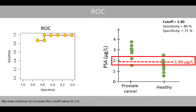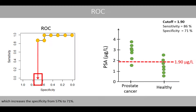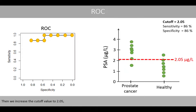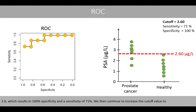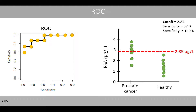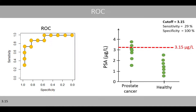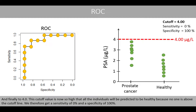Increasing the cutoff to 1.9 raises the specificity from 57% to 71%. Continuing to increase the cutoff to 2.05, 2.25, and 2.6 results in 100% specificity and 71% sensitivity. Increasing further to 2.85, 3.0, 3.15, 3.55, and finally 4.0 results in a cutoff so high that all individuals are predicted to be healthy, giving 0% sensitivity and 100% specificity.